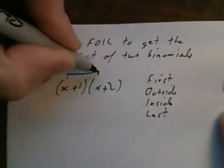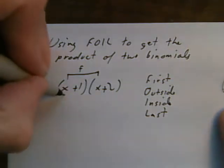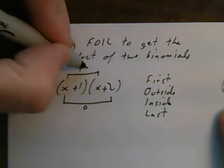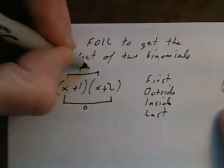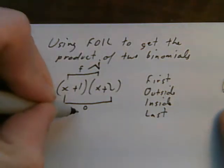So this will be the first, x times x. Outside will be x times plus 2. Inside will be 1 times x, and the last will be 1 times 2.